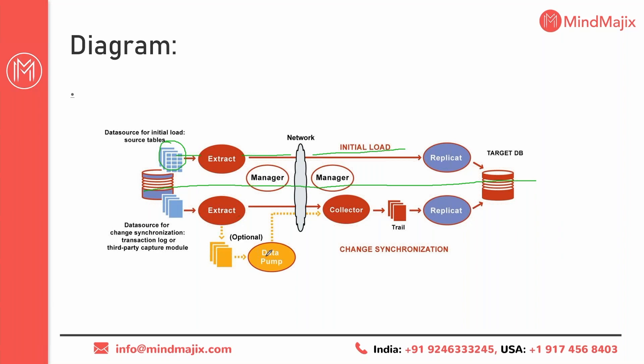Coming to data pump: the extract process reads data from the source and writes all changes to the local trail file. Then the data pump reads from the local trail file and distributes data to the target over the network. At the target side, there is a background process called collector.